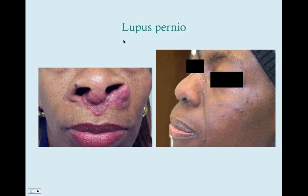This is lupus pernio, which is your pathognomonic sign for sarcoidosis. Like any lupus skin disease, it affects the upper cheeks, around the eyes, and below the nose. Lupus pernio specifically is an indurated, tough, purplish lesion — it's very disfiguring. It tends to start around the bottom of the nose and then spread outward laterally to the cheeks and up the nose. It affects the tip and skin around the nose, but generally doesn't go into the nose itself, so patients are usually able to breathe through their nose.